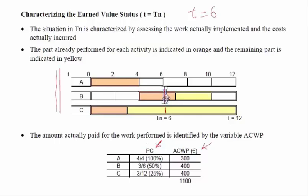What we implemented up to this point in time is outlined in orange. To implement A, we paid 300 euros. To implement half of B, we paid 400 euros. And to implement 25% of C, we paid 400 euros. So this is the total of what we paid up to this point in time.